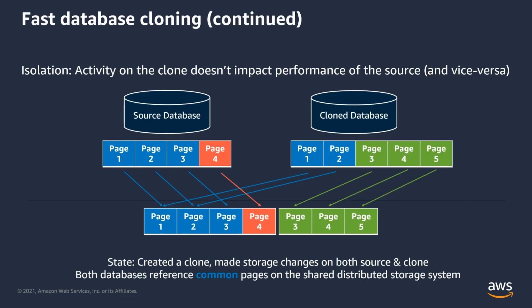When there are write operations on either cluster, consider an example where an update takes place on the source Aurora cluster which affects data page 4. Instead of modifying the original data page 4, Aurora will make a copy of it — the orange box — and the source database will point to it, while the clone cluster still refers to the original data page 4. Similarly, when a write occurs on the clone cluster affecting data pages 3, 4, and 5 — the green boxes — new data pages are created and the clone cluster points to the new data pages 3, 4, and 5. The source and clone database still access the original data pages 1 and 2 since those were not changed.